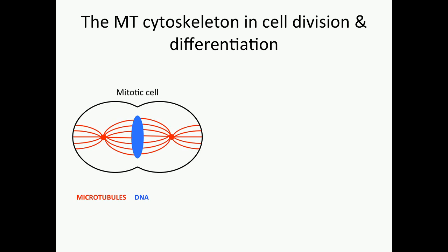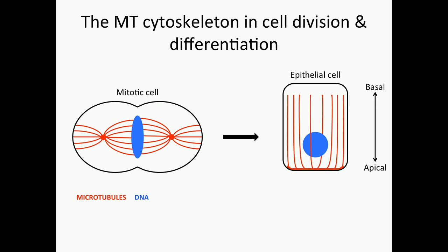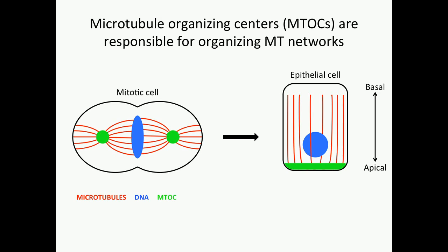Microtubules are involved in many cellular processes. Arguably the best characterized of those is formation of the bipolar spindle in mitotic cells. After differentiation, however, there's no longer a need for the spindle, and so many cells undergo a dramatic reorganization of their microtubule cytoskeleton. There are important cellular structures known as microtubule organizing centers, or MTOCs, that are responsible for imparting this organization.